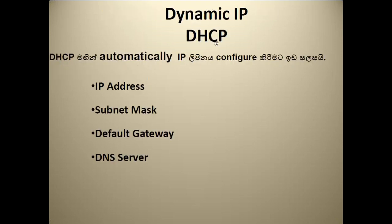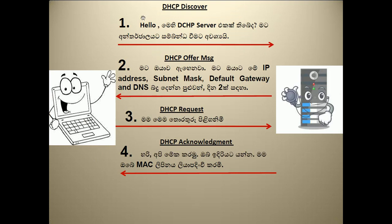Dynamic IP is DHCP. If you want to use a static IP address, you customize the IP address manually. With DHCP, you can have the IP address, subnet mask, default gateway, and DNS server assigned automatically. Now we need to understand the process of DHCP.